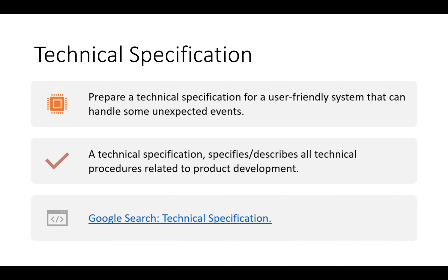Prepare a technical specification for a user-friendly system that can handle some unexpected events. A technical specification specifies or describes all the technical procedures related to the product development. Someone comes to you with no technical knowledge and describes what they want in plain English; you as the engineer sit down and think about what that actually means. You need to design a system that can stop when someone presses a button, count, output the count on an LCD screen, and so on — breaking their description down into a technical specification.